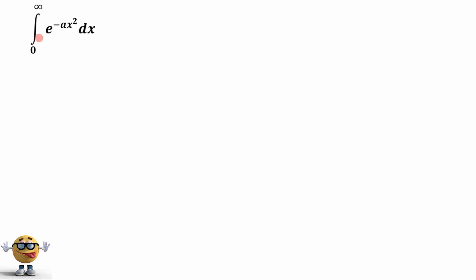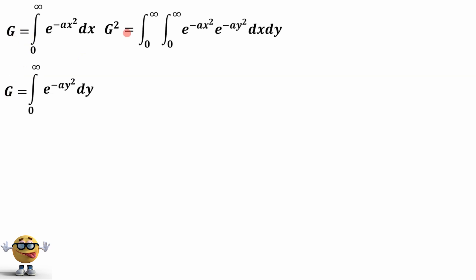So this is the integral we want, and we're going to set this equal to a number — call it g, because sometimes this is called the gamma function, but for us it's just going to be a number. Now we're going to set up this exact same integral, nothing's changed except the variable: instead of x, we're calling it y. These are going to be the same, and if we multiply them together, we get g squared on the left, and on the right we're just multiplying our two integrals together.